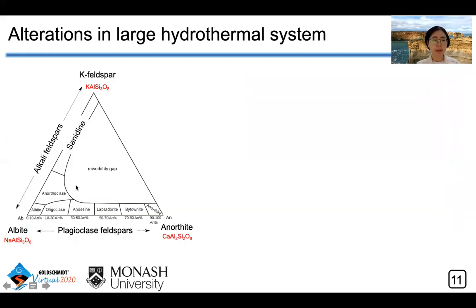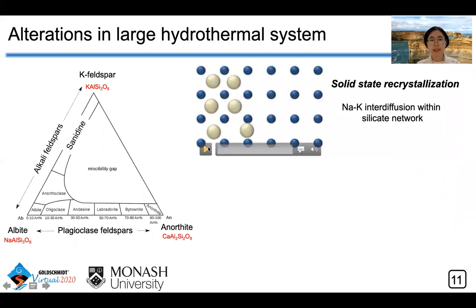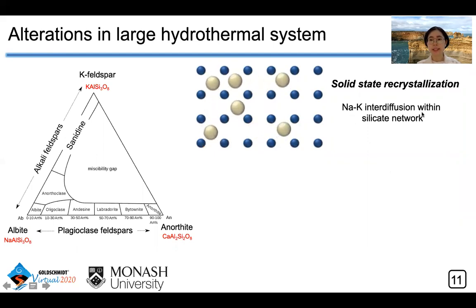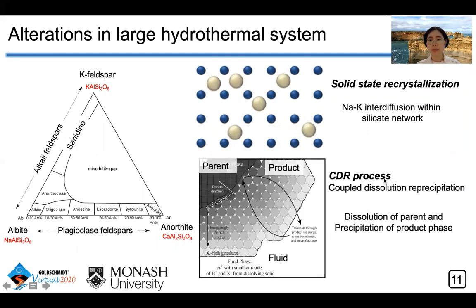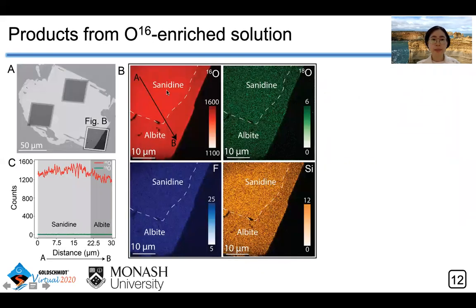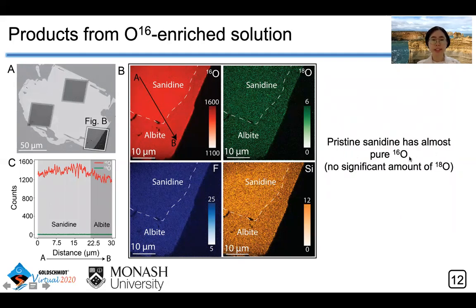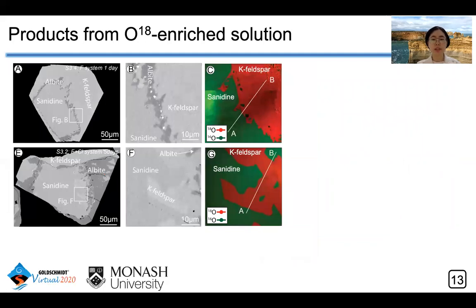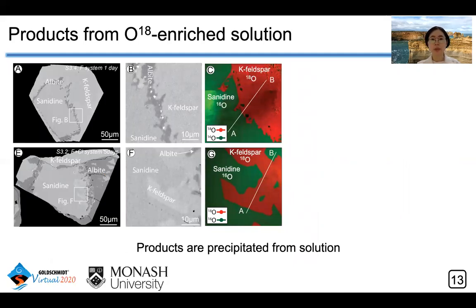This K-feldspar zonation and albite are solid solutions. We are curious whether this reaction proceeds through a solid-state recrystallization process with sodium and potassium interdiffusion within the silica network, or proceeds through a coupled dissolution-reprecipitation (CDR) process with dissolution of the parent and precipitation of the product phase. The pristine zonation has higher oxygen-16 and lower oxygen-18 content, meaning the pristine sanidine has almost pure oxygen-16. However, reaction products formed from oxygen-18-enriched solution, such as K-feldspar or albite, are characterized by higher oxygen-18.